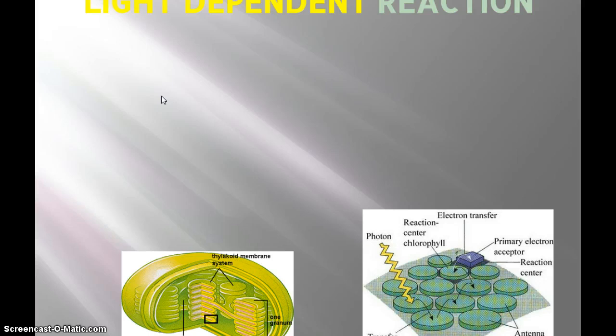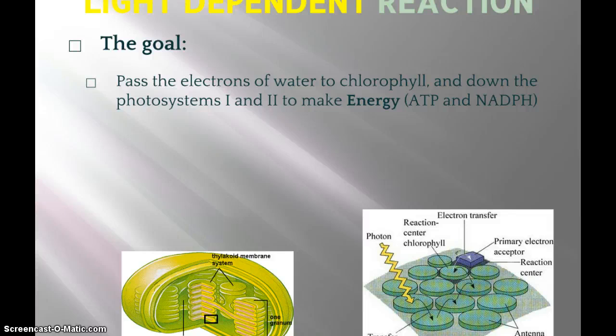Hi guys, I'm here to talk about the light-dependent reaction, which is just one of two stages of photosynthesis. The goal of the light-dependent reaction is to pass electrons of water to chlorophyll, and then down the photosystem 1 and 2 reaction centers to make energy — specifically ATP and NADPH. ATP is a use-it-or-lose-it energy source.